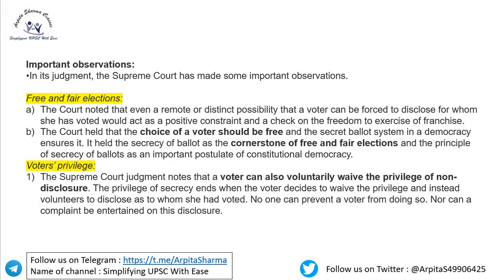In this judgment, the Supreme Court made some important observations, relevant for GS Paper 2. On free and fair elections, the court noted that even a remote possibility that a voter can be forced to reveal for whom they voted will act as a constraint and a check on the freedom to exercise franchising. The court held that the choice of a voter should be free — this is the very essence of free and fair elections.